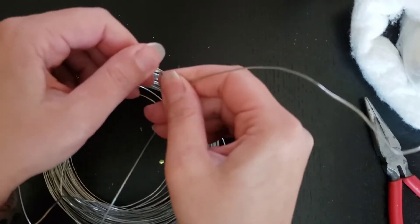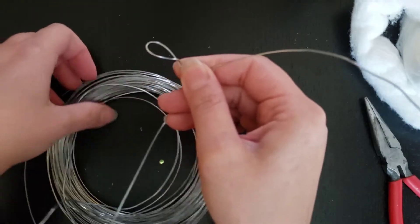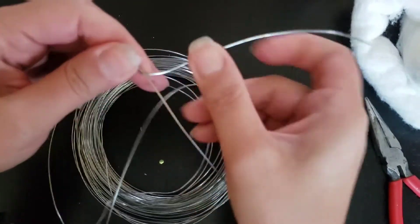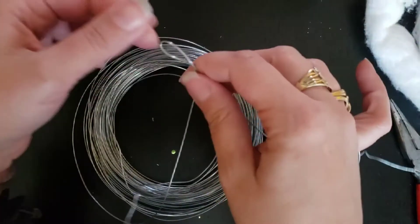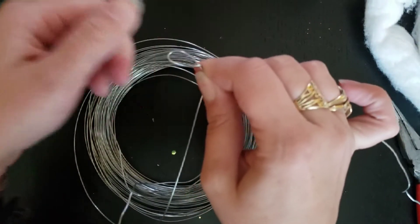So we're going to start with making the base to our ornament. We're just going to wrap some wire. This is going to be the loop for the top, so you can hang the ornament.